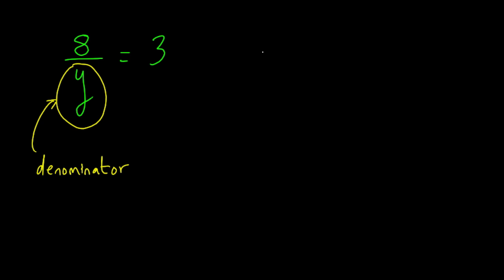So how do we do that? Well, the basic strategy in this case is to multiply both sides of our equation by y. So here I'm going to use yellow, multiply this side by y and multiply this side of the equation by y. Again, we're keeping things balanced, we're multiplying both sides by the same amount.